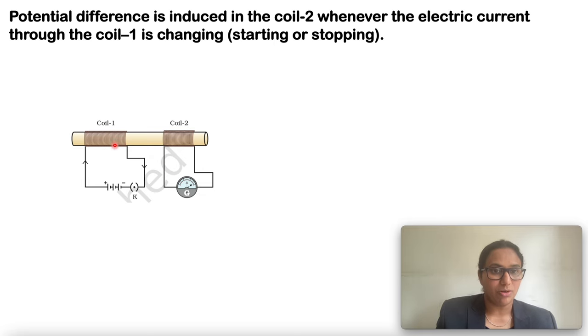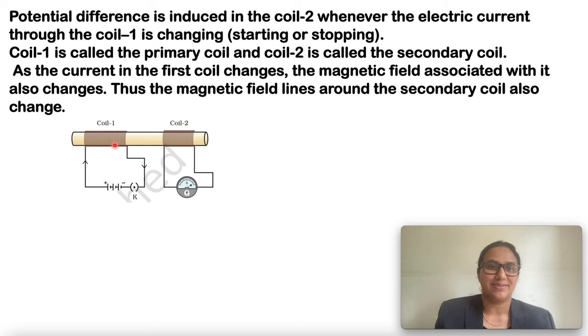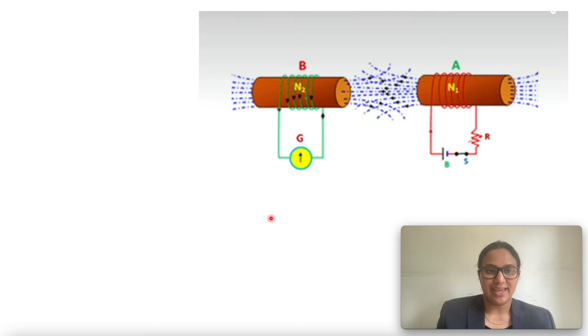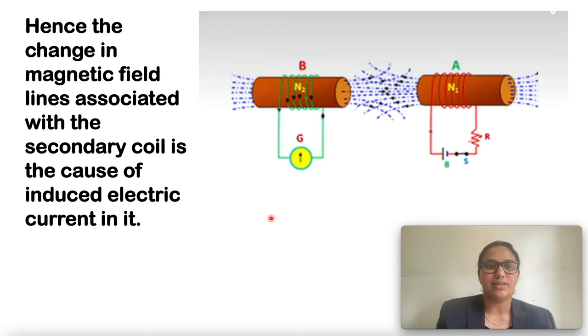Coil 1 is called the primary coil and coil 2 is called the secondary coil. As the current in the primary coil changes, the magnetic field associated with it also changes. Thus, magnetic field lines around the secondary coil also change. Current is varied in coil 1 and an EMF is induced in coil 2.